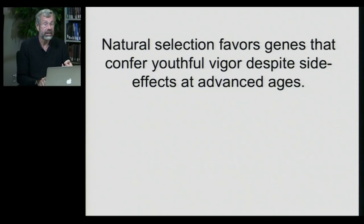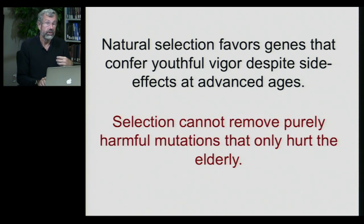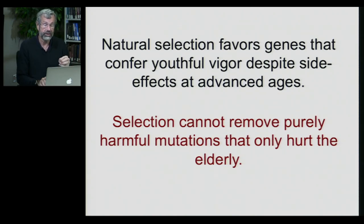To summarize these two ideas: with antagonistic pleiotropy, we're thinking about how natural selection can favor genes that confer youthful vigor despite side effects at advanced ages. With mutation accumulation, we're realizing that selection cannot remove purely harmful mutations that only hurt the elderly, because so few individuals are still alive to suffer those costs.